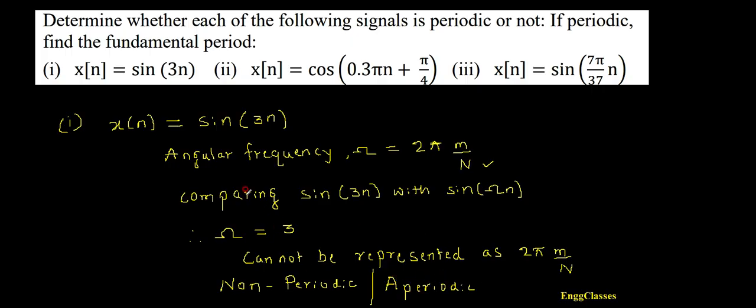Whenever we get a numerical on sinusoidal terms, first check if the pi term is there or not. If the pi term is not there, I could straight away say that the given signal is non-periodic. The reason is that the angular frequency cannot be represented as a rational multiple of 2 pi.